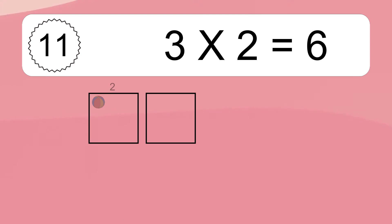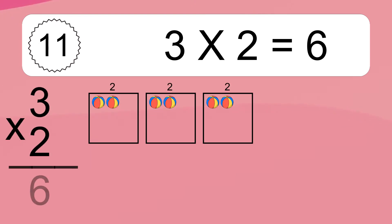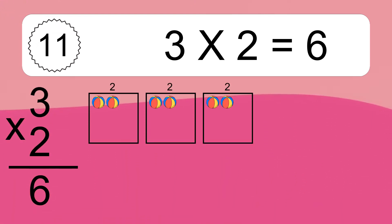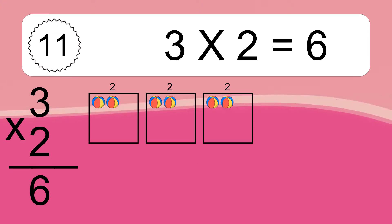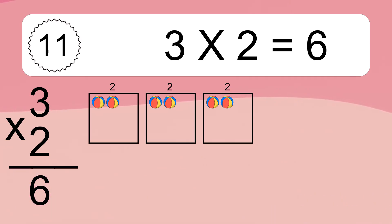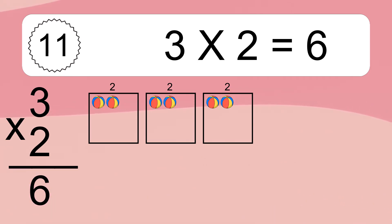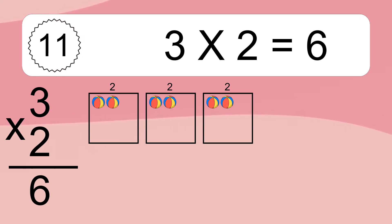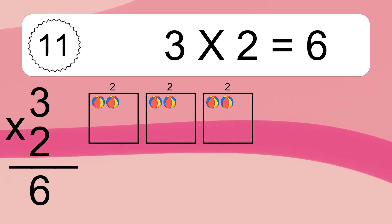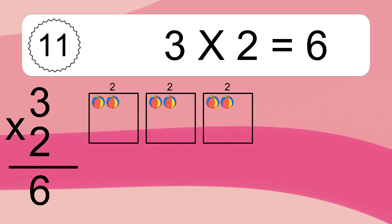3 times 2 equals 6. We have 3 boxes, and each box has 2 colorful balls inside. If you count all the balls in all the boxes together, you will have 3 times 2 balls. This equals 6 balls.